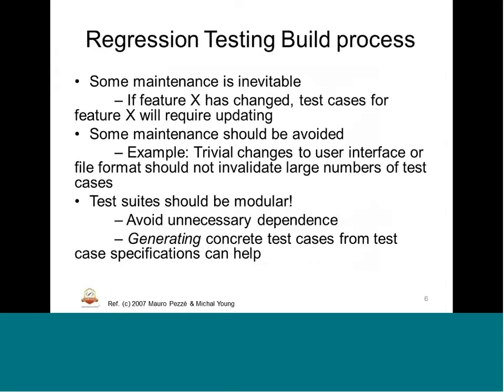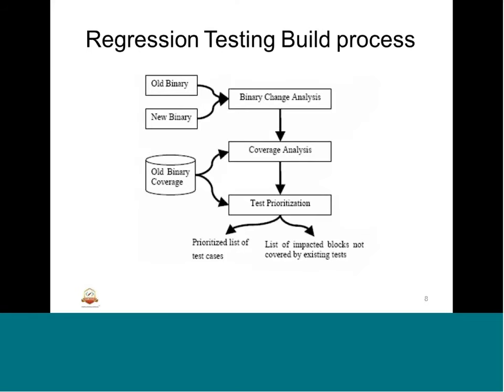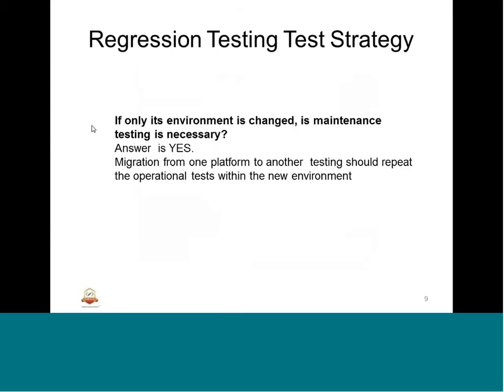Having understood regression testing, test case maintenance, selection, and prioritization — one question is: if only the environment has changed, is maintenance testing necessary? The answer is yes. Migration from one platform to another means testing should repeat the operational tests with the new environment. We do not need to re-execute everything — only the operational tests that are tightly coupled with the target platform or that change with the new environment need to be considered. That is where the regression testing strategy should adhere.